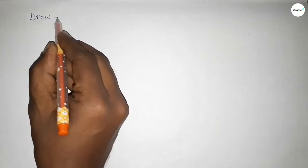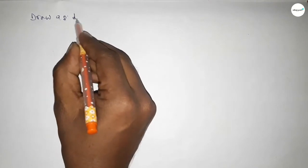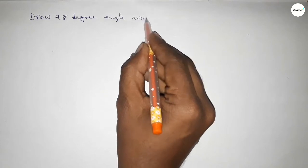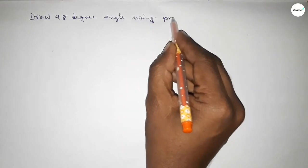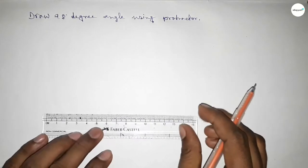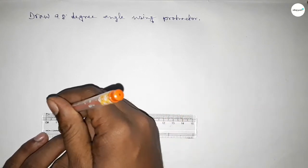Hi everyone, welcome to SI Share Classes. Today in this video, we have to draw a 98-degree angle using a protractor. So let's start the video. First of all, we have to draw a straight line of any length.